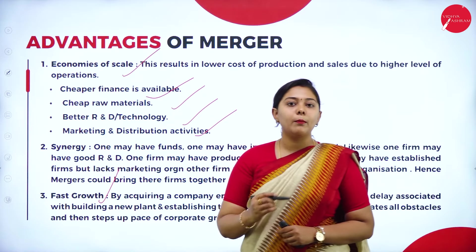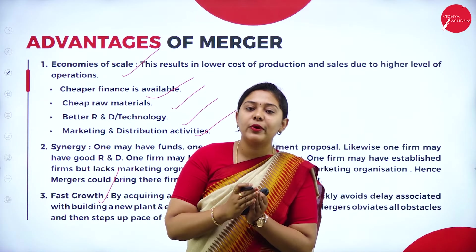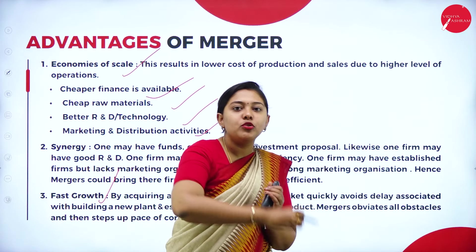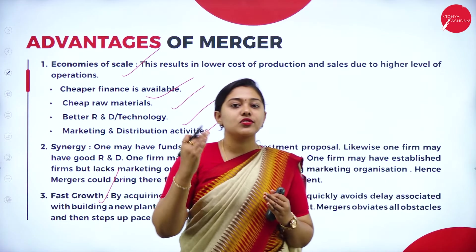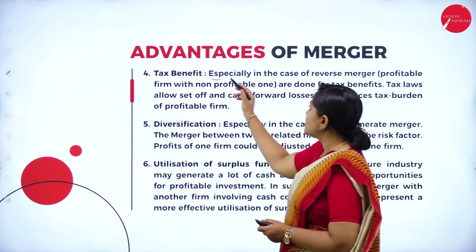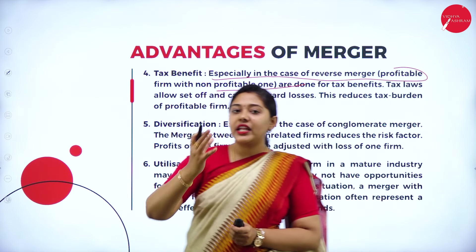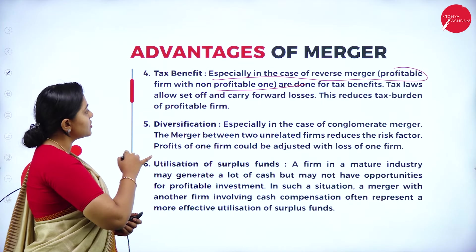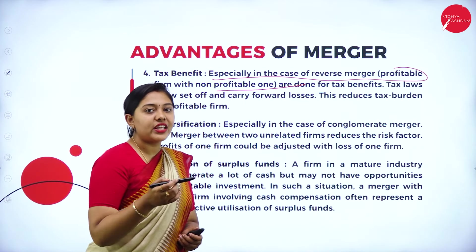Next advantage is fast growth. The company can grow at a faster rate because they can access available resources. If Company A has raw materials that Company B needs, Company B need not import them — it can take raw materials from Company A directly, leading to faster growth and optimum use of resources. Tax benefit is another advantage — especially in the case of reverse merger, where a profitable firm takes over a non-profitable firm. Tax laws allow set-off and carry-forward of losses, reducing the tax burden for a profitable firm.